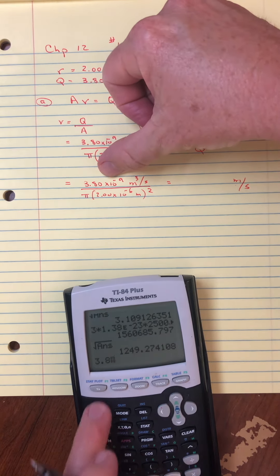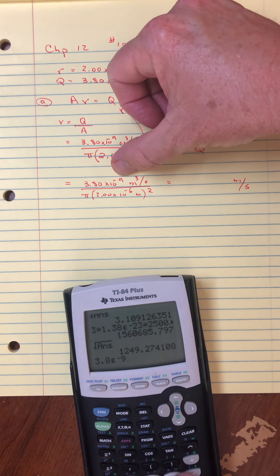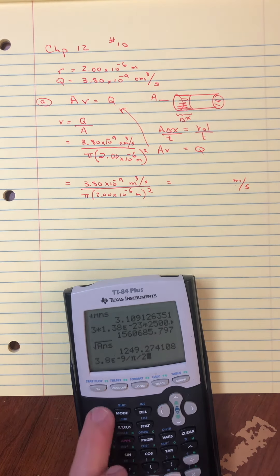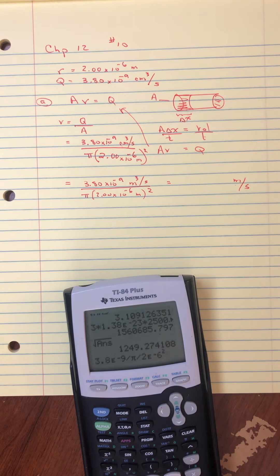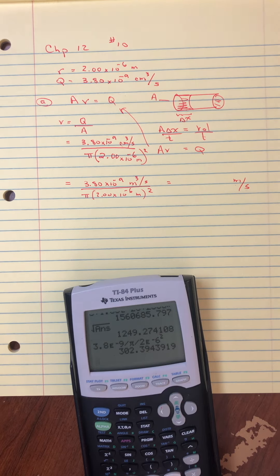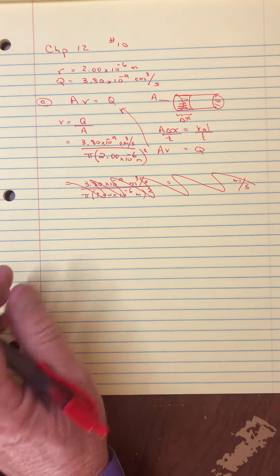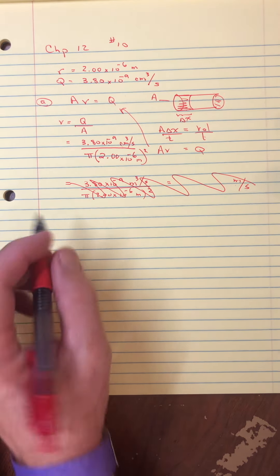So, 3.8 times 10 to the negative 9, divided by pi, and divide that by 2 times 10 to the negative 6 squared. That would be pretty fast. Okay, never mind. Let's give this a shot then. So I'm going to try it again.